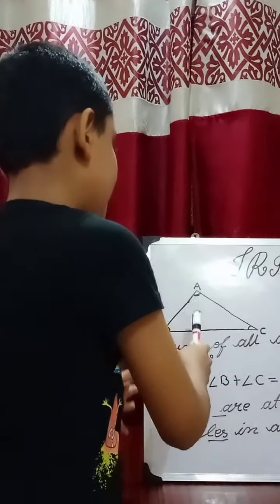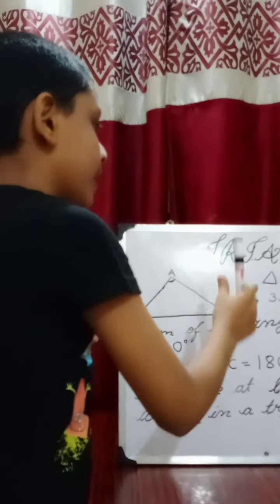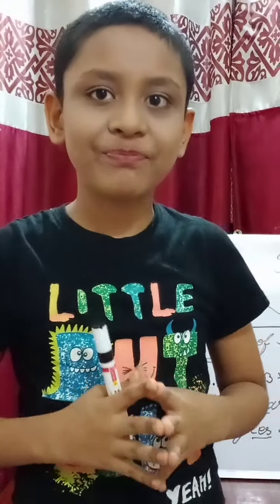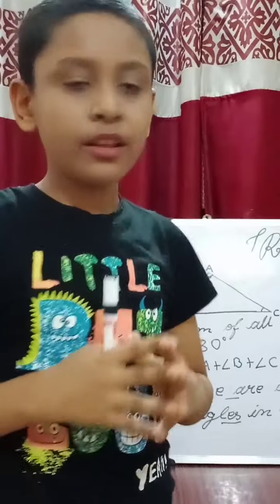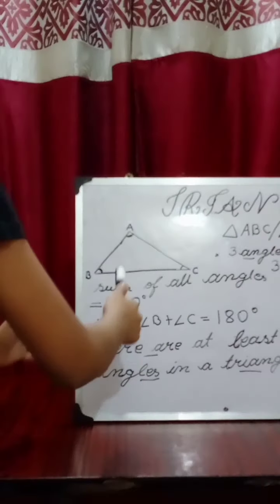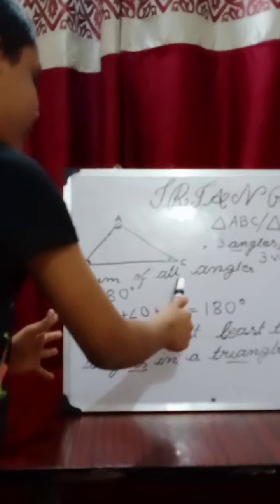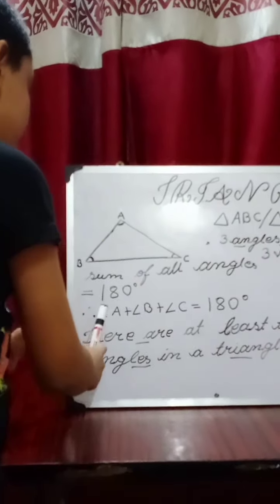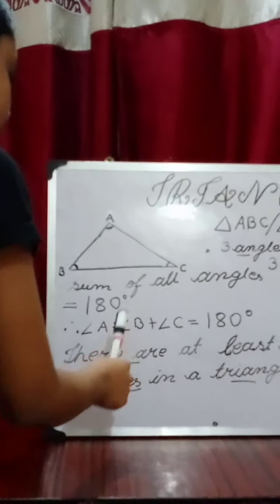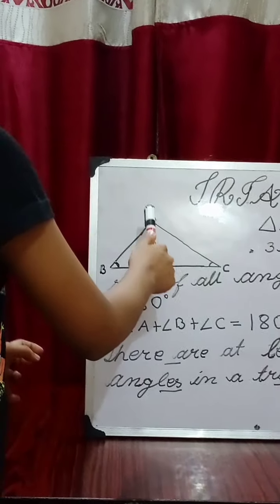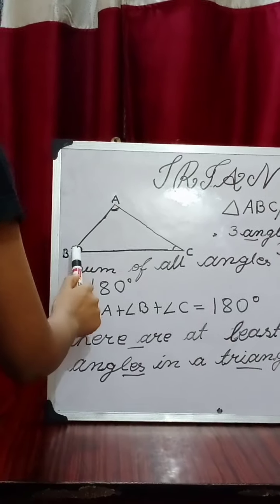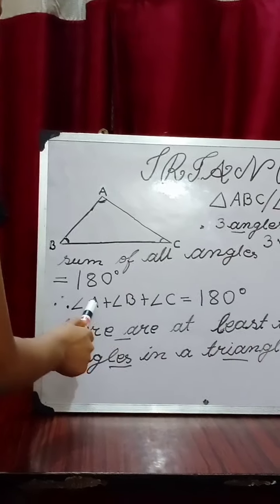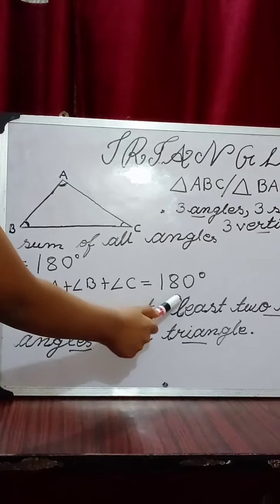Now there are some facts related to triangles. The first fact is the sum of all angles has to be 180 degrees. In this triangle there are three angles: angle A, angle B, and angle C, and the sum of these three angles is 180 degrees.